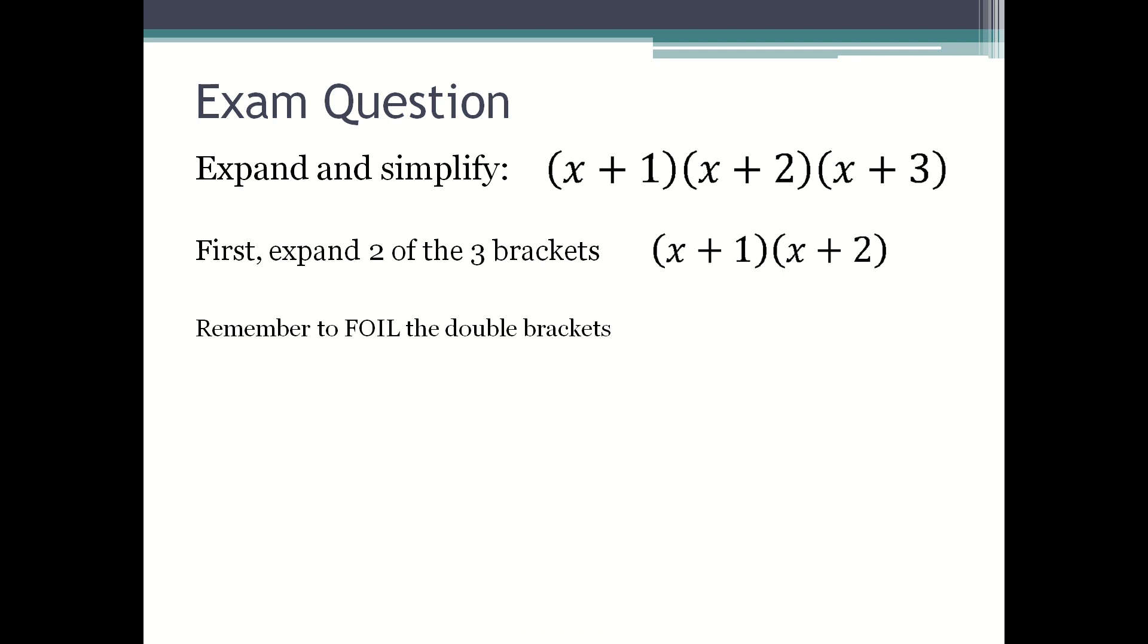Remember to FOIL the double brackets. So you multiply the first in each bracket - that's x times x which gets x². The outside: x multiplied by 2 is 2x. X multiplied by 1 is x. And then for the last terms in the brackets, 1 times 2 is 2.